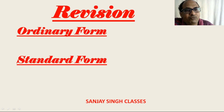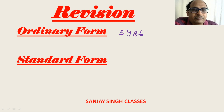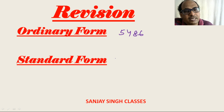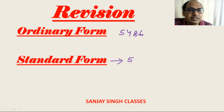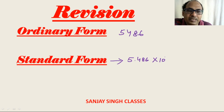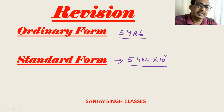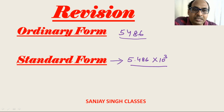Ordinary form: if we are given any number like 5486, this is called an ordinary number. When we express the same number in standard form, we put one integer between 1 and 9, then a decimal, writing 5.486 into 10 to the power 3. This is the standard form. In ordinary form, we don't put 10 to any power, whether positive or negative.